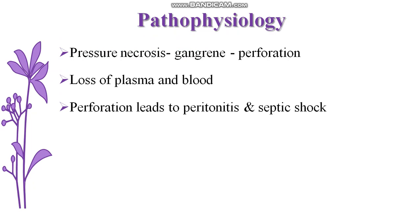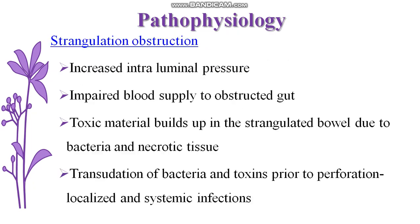This is about the pathophysiology of strangulated intestinal obstruction. In strangulation, there is increased intraluminal pressure and impaired blood supply to the obstructed gut. Due to the proliferation of bacteria in the fecal matter collected in the proximal gut, there can be build up of toxic waste products or materials. In the initial region, that is before perforation, there can be localized and systemic inflammation.